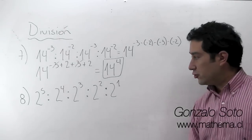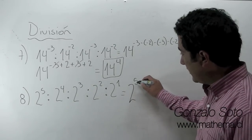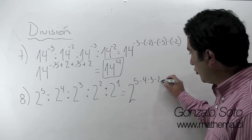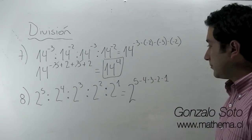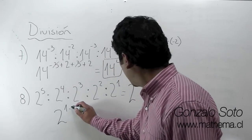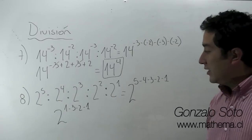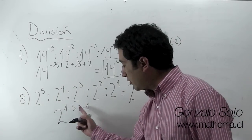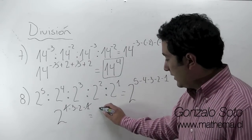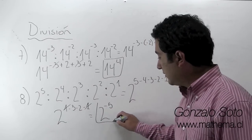En el ejercicio 8 tenemos que la base es 2, exponente 5. Son todos positivos, entonces vamos a poner: menos 4, menos 3, menos 2, menos 1. 5 menos 4 es 1 positivo. Fíjense: números iguales con distintos signos — es 0, se restan. ¿Y qué nos queda? Menos 3 menos 2: conservamos el signo negativo y sumamos las cantidades, menos 5.